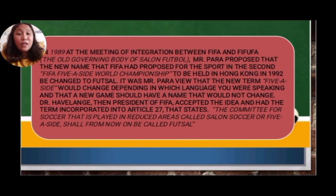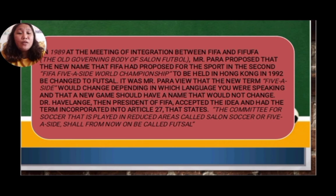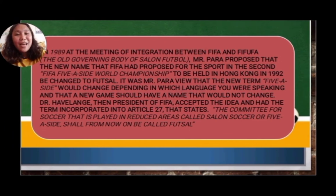In 1989, at the meeting of integration between FIFA and FIFUSA — the old governing body of salon football — Mr. Para proposed that the name FIFA had proposed for the sport in the second FIFA Five-Aside World Championship, to be held in Hong Kong in 1992, be changed to 'futsal.' Mr. Para argued that 'five-a-side' would change depending on the language being spoken, and that the new game should have a name that would not change. Dr. Havelange, then president of FIFA, accepted the idea and had the term incorporated into Article 27, which states that the committee for soccer played in reduced areas — called salon or salon soccer or five-a-side — shall from now on be called futsal.